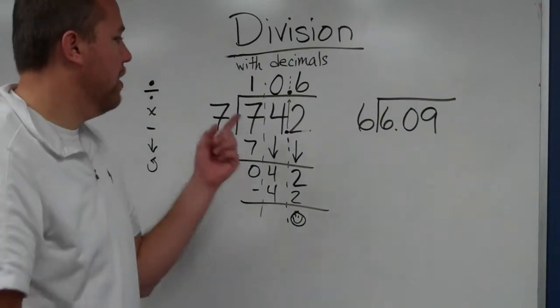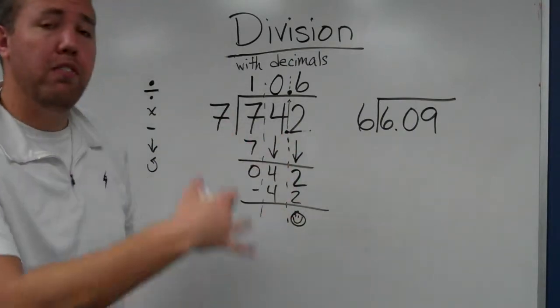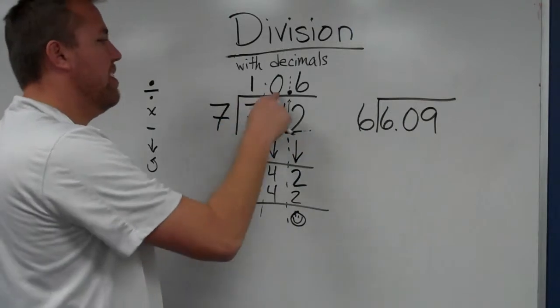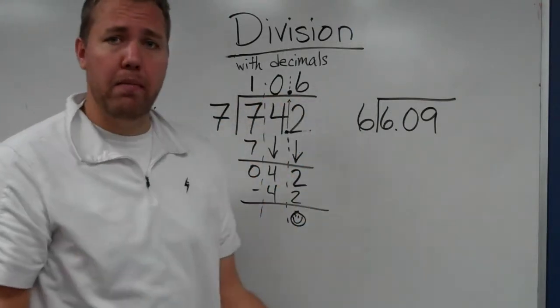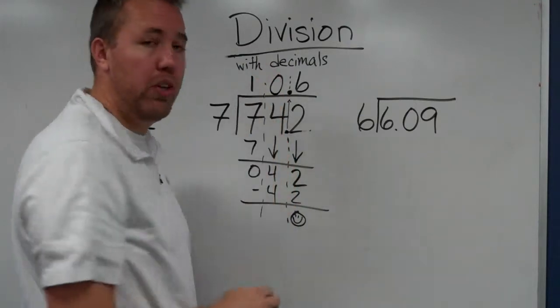There's no remainder. So 74.2 or 74 and 2 tenths divided by 7 is 10 and 6 tenths, or 10.6. We don't have to worry about it much because we just brought that decimal point straight up.